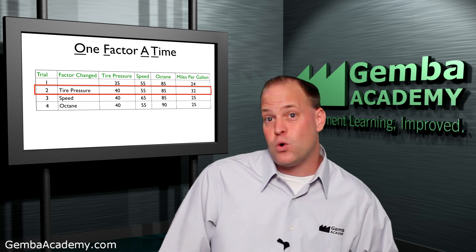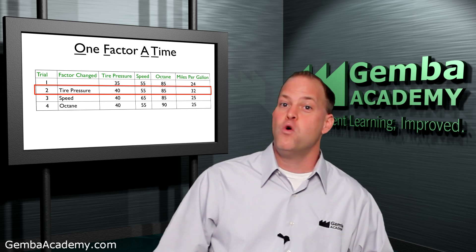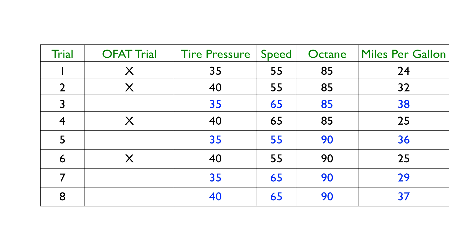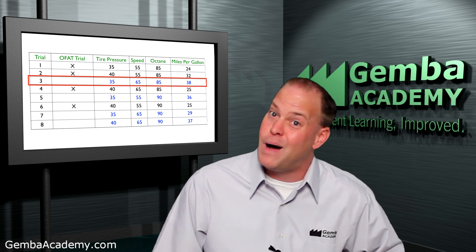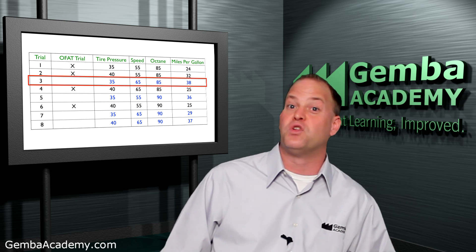As we'll explore in our next module, when we have three factors at two levels, we actually need to do eight trials in order to test every possible factor combination. We've only done four of these eight trials. When we do the other four trials, we discover an extremely interesting interaction between the factors — setting the pressure at 35 psi, driving at 65 miles per hour, and using 85 octane gasoline actually results in 38 miles per gallon. Had we only done the four one-factor-at-a-time experiments, we wouldn't have discovered this powerful interaction. This is how dangerous and ineffective OFAT experiments can be, since they don't test every combination of factors like a DOE does.